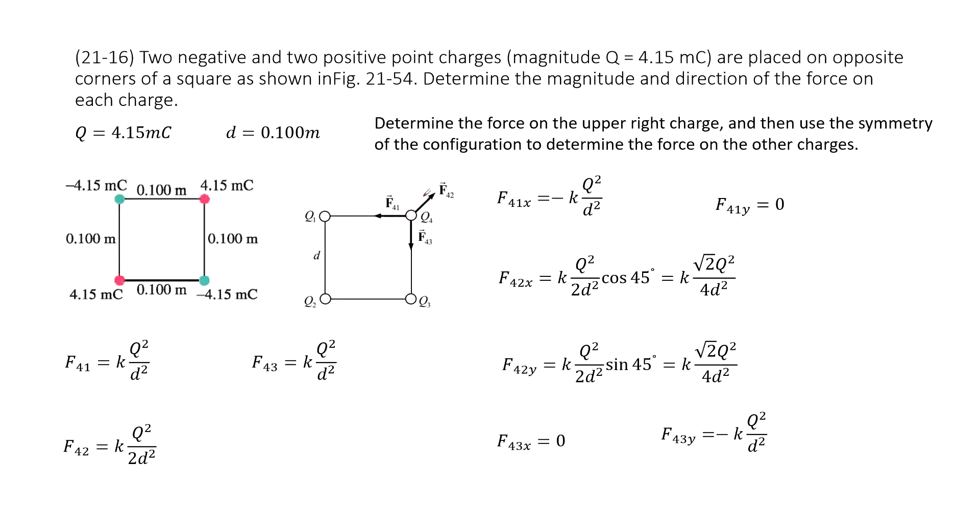Now we need to project F41, F43, F42 on x-component and y-component. Then we can find the magnitude of the net force. F41 on x-component is pointing negative, and the y-component is 0. F42 on x-component times cosine 45 degrees. For the y-component, times sine 45 degrees. F43 x-component is 0, and the y-component is negative.